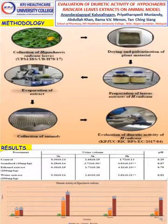The groups were divided into control, standard, ethanol extract treated animals, and water extract treated animals. The urine volume was collected individually and combined to check the pH. Urine volume was collected at one hour, third hour, and fifth hour after the administration of the drug molecules.